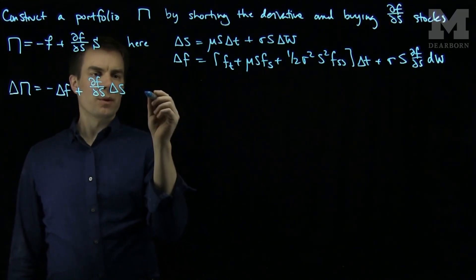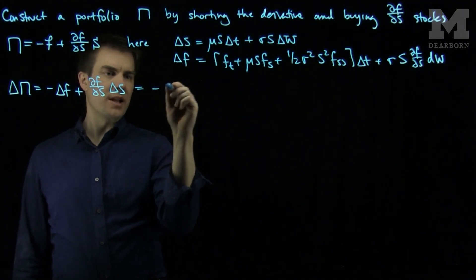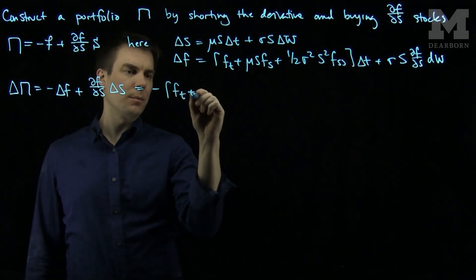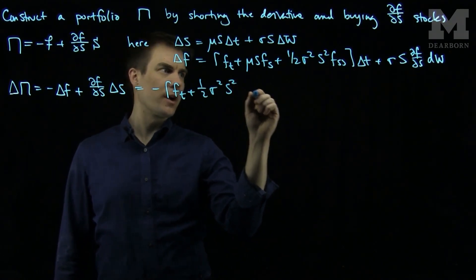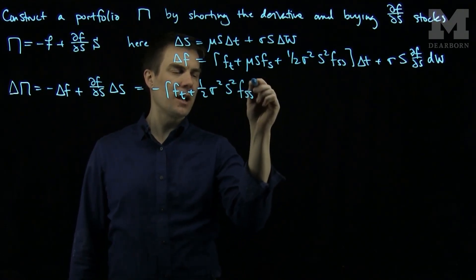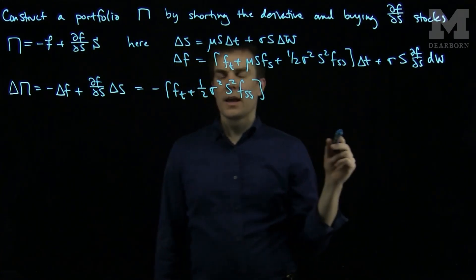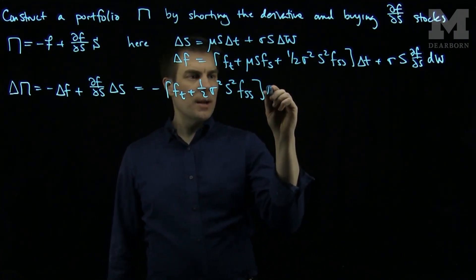And we saw that when we computed this, we will get negative ft plus one-half σ² s² fss, and this will be times dt.